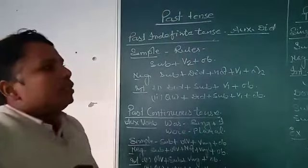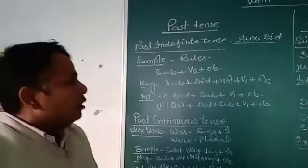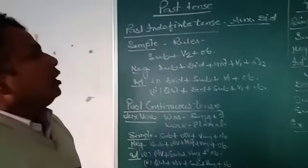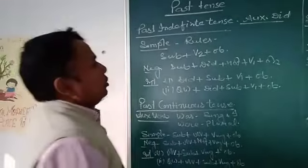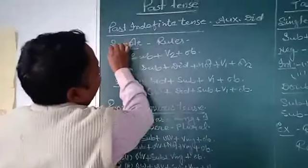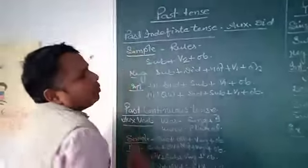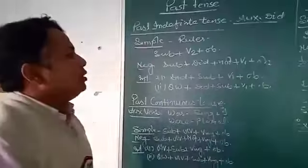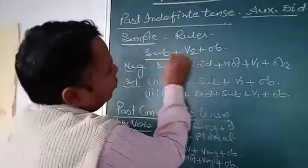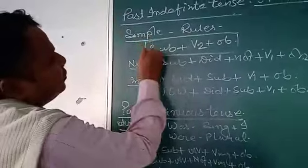Past tense means work which had been done in the past. The work you had done in the past is called past tense. Simple past tense is considered difficult because there is no auxiliary verb in the simple affirmative form.